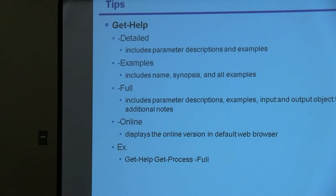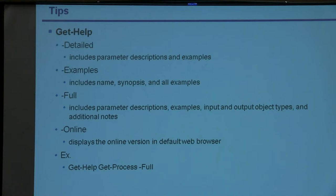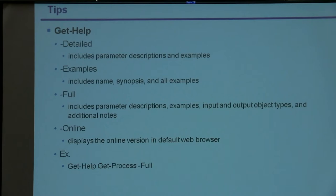Get-Help is a good way to get information about a cmdlet. You can type something like get-help get-process and it'll give you the help information for get-process. There are different parameters for get-help. Some popular ones are -Detailed, which includes the parameters, description, and examples. -Examples gives you mainly just the examples. -Full gives you pretty much everything. And -Online actually goes out to the online help page to pull that up. That's very useful for learning what a cmdlet will do.